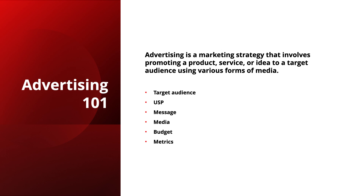Next is your message. The advertising message should be clear, concise, and compelling. It should communicate the USP or your point of differentiation and appeal to the emotions and needs of the target audience. There is something in marketing called the three desires — most people seek wealth, relationships, or status. You want your advertisement to say: my business does this, we're different because of this, and I can help you achieve this.